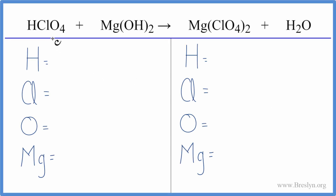To balance the equation for this neutralization reaction, we have perchloric acid plus magnesium hydroxide — an acid and a base. Let's count the atoms on each side.